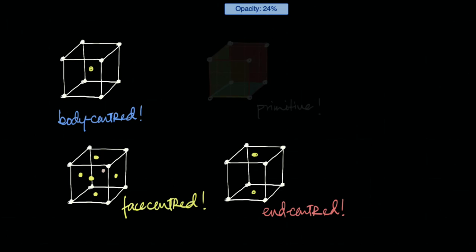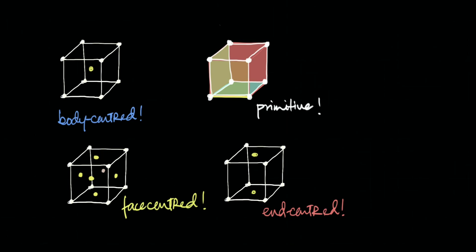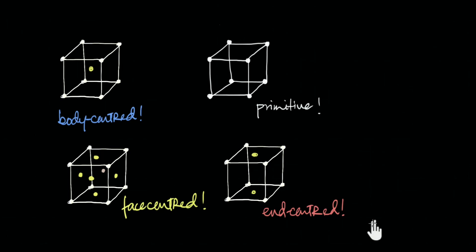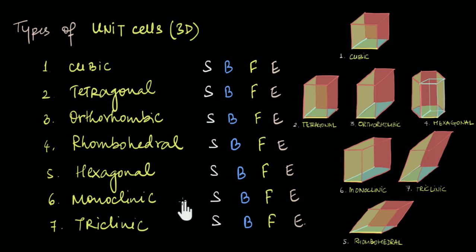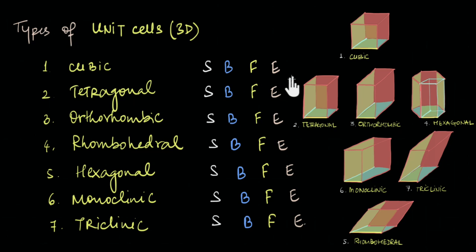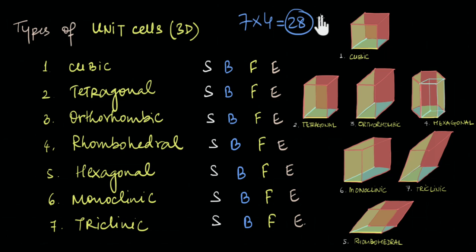To summarize: besides the primitive unit cells, the body-centered, face-centered, and end-centered unit cells also generate valid Bravais lattices. Based on symmetry alone there are seven fundamentally different shapes that can qualify as a unit cell, and besides the primitive type we can also have body-centered, face-centered, and end-centered unit cells. If we do the math, we could have 28 different types of Bravais lattices in three dimensions.